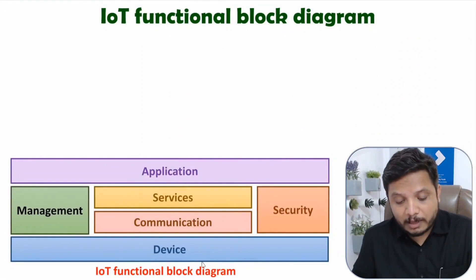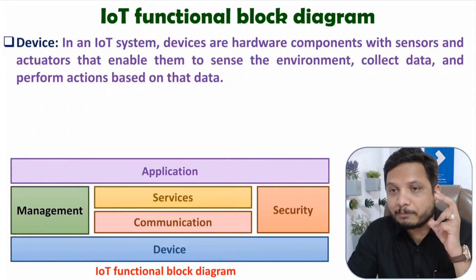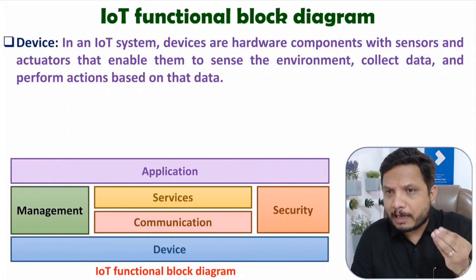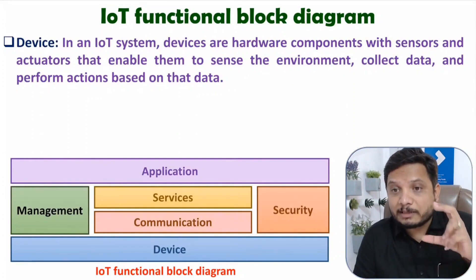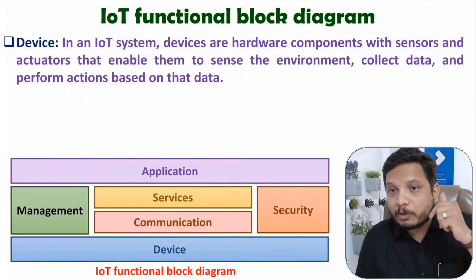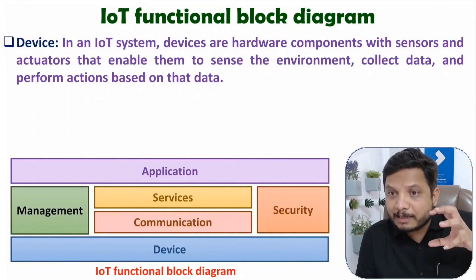In the IoT functional block diagram, we have six components. The first component is the device. When it comes to devices in IoT, N devices basically consist of sensors and actuators. Sensors will sense physical data such as temperature, moisture data, or even gas data. Actuators provide you with a physical response. For example, you can use a valve or a motor as an actuator.